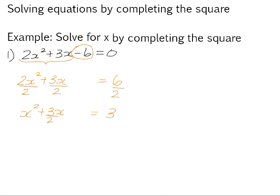We now want to find the term that completes the square for the trinomial. We need to take the coefficient of the x term, which is 3 over 2, divided by 2, which is the same as multiplying by a half, and square it.